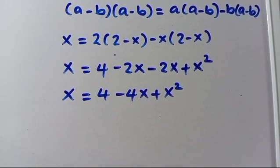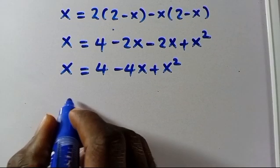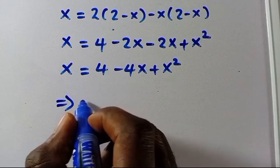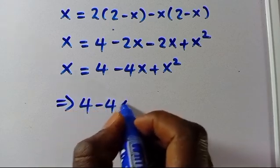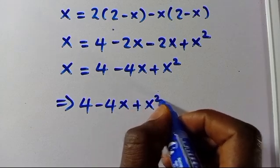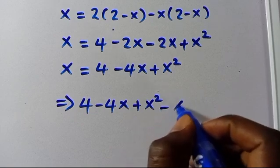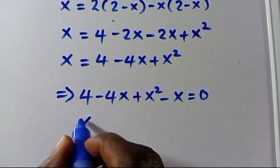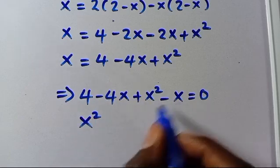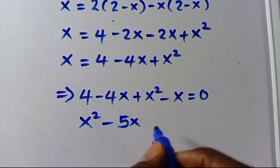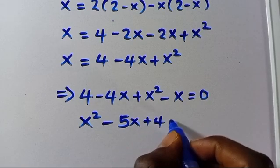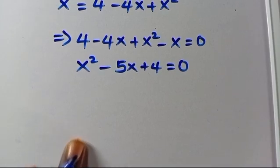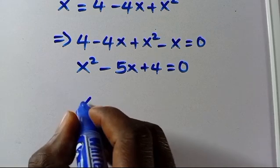From here we collect like terms and move everything to one side. We have 4 minus 4x plus x squared, and then subtracting x from both sides. This gives us x squared minus 4x minus x, which is minus 5x, plus 4 equals zero.